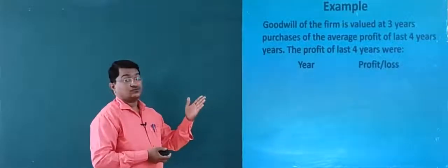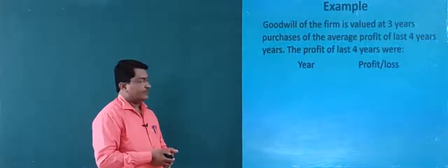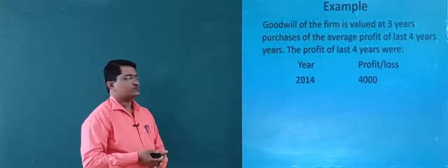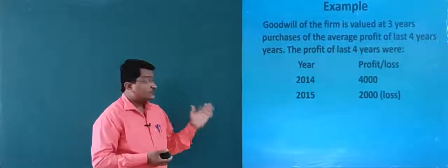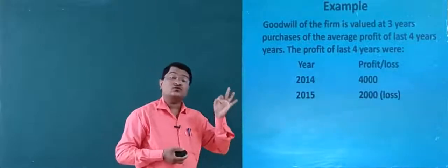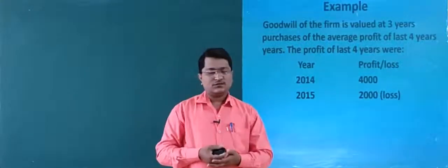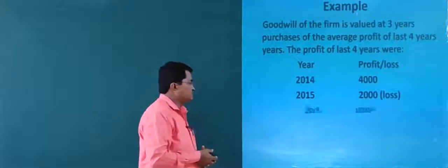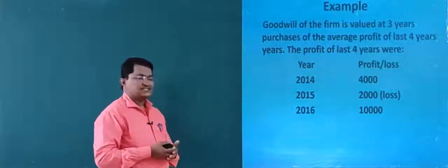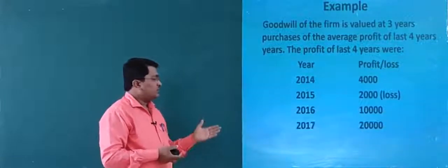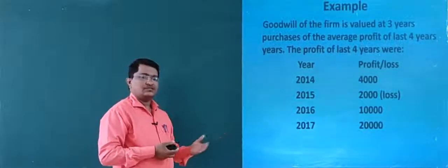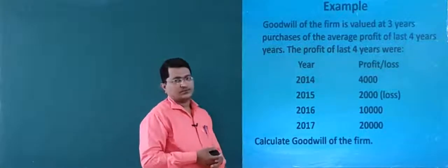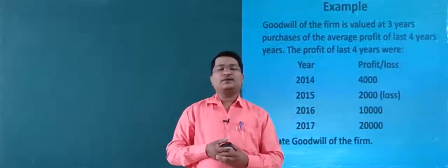Year-wise profit or loss: in 2014, profit is 4,000. In 2015, rupees 2,000 is a loss. In 2016, profit is 10,000. In 2017, profit is 20,000. Calculate goodwill of the firm under average profit method.